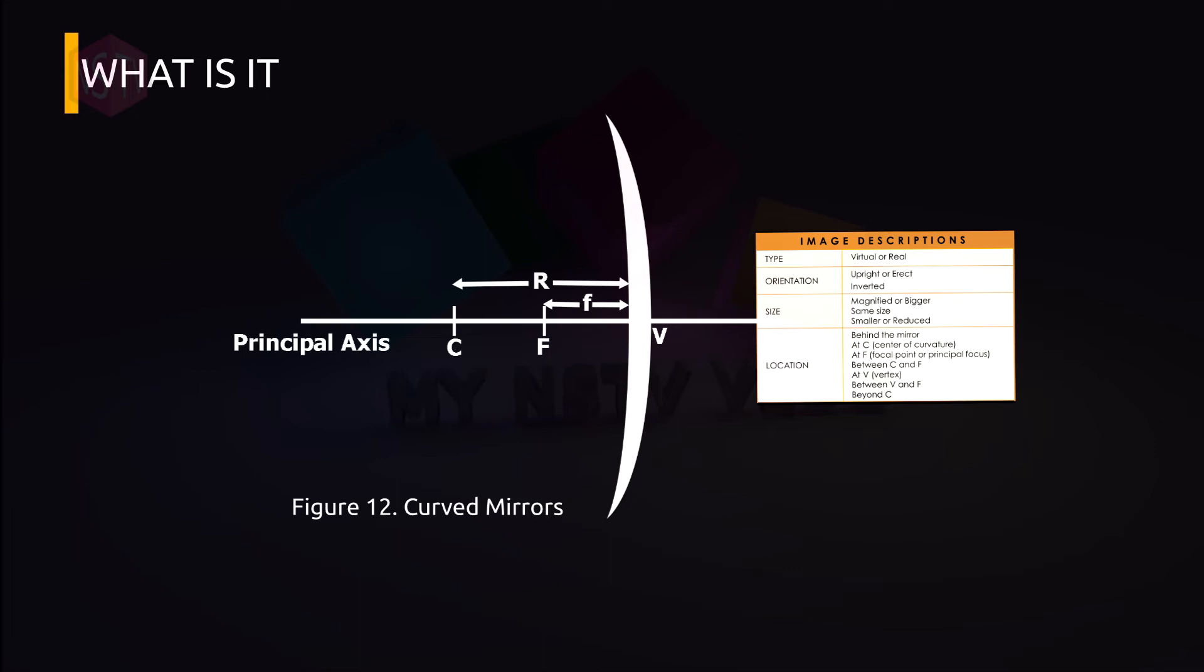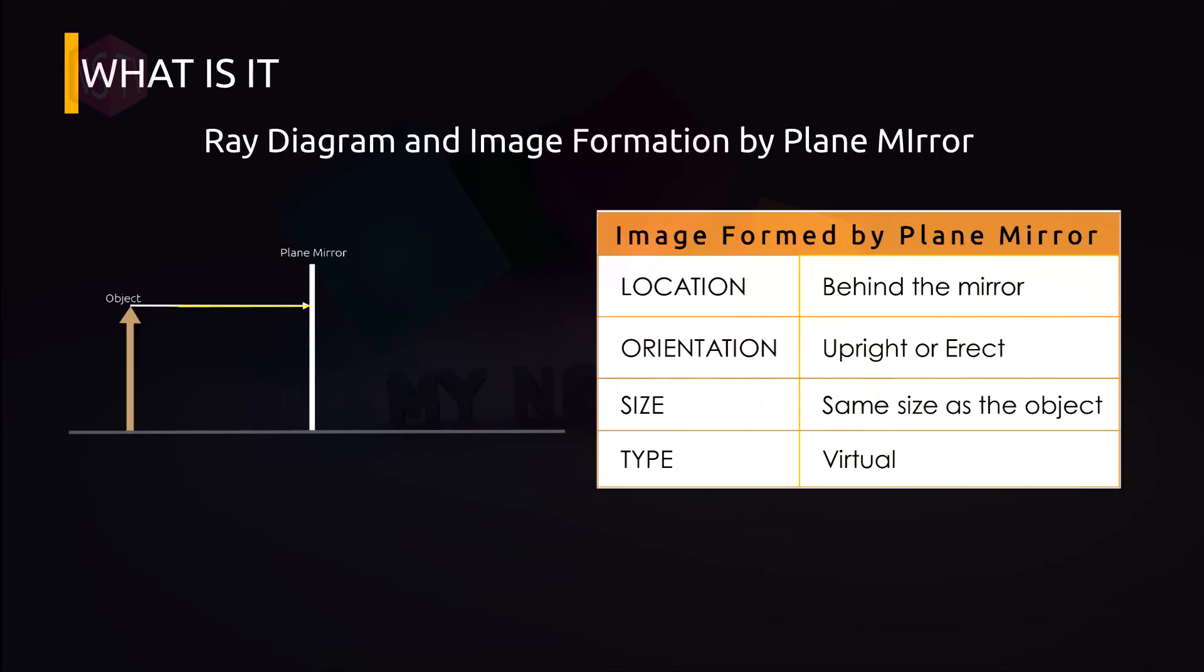Did you get important terminologies and details? Alright. Now we're ready for the description of image using ray diagram. So please look at the table on page 11 of your module in figure 8. Let's describe the image formed in a plane mirror. The location is behind the mirror, its orientation is upright or erect, its size is the same as the object, and lastly, the type of image is virtual. So next, we proceed with the curved mirror.